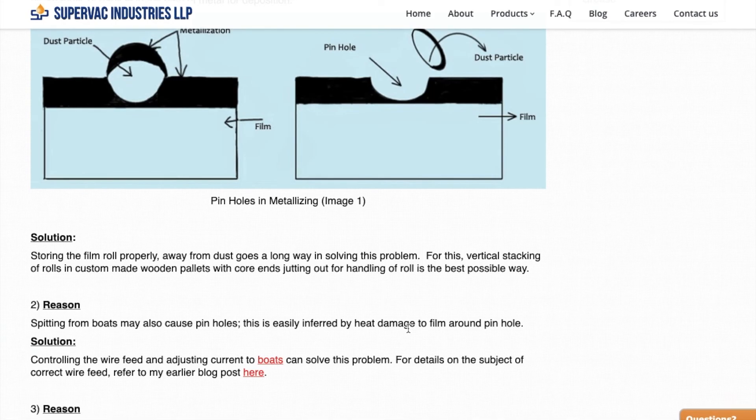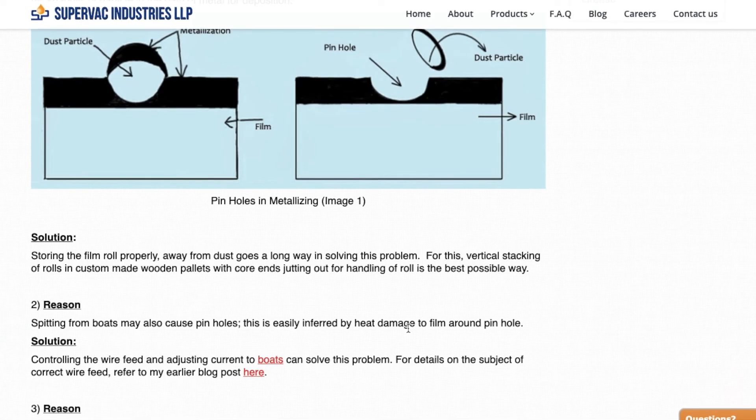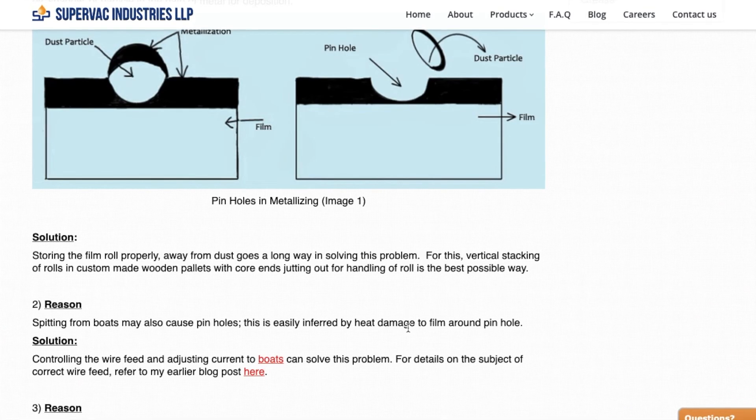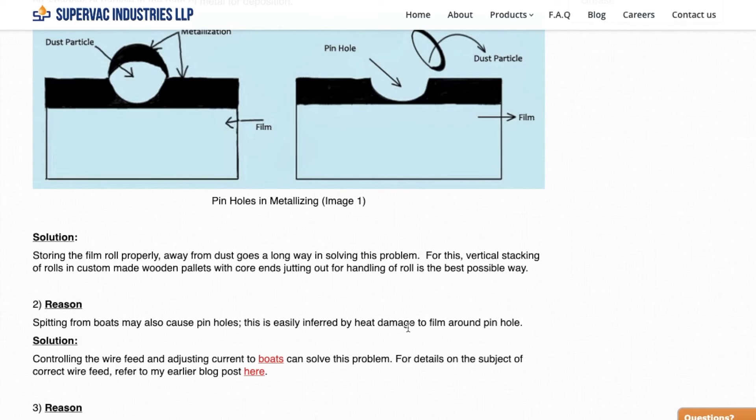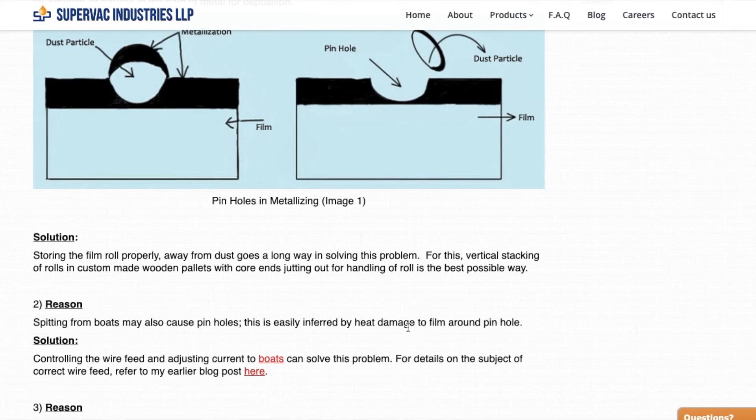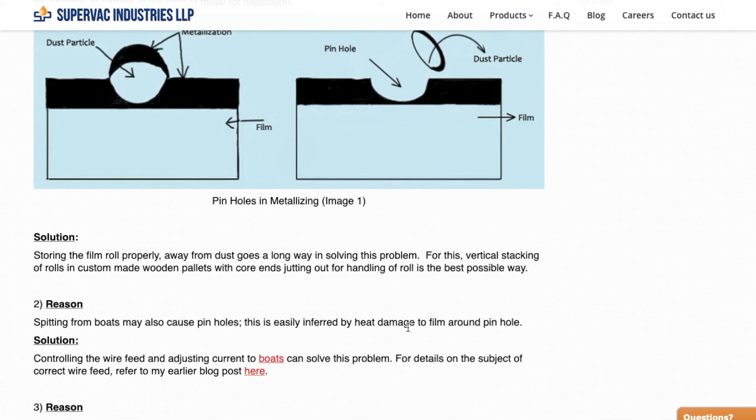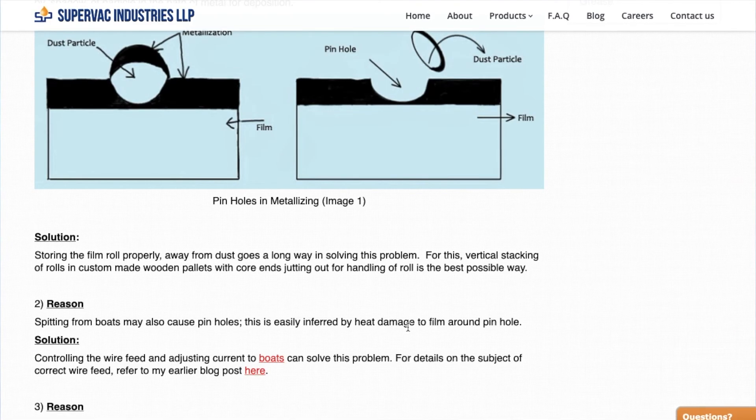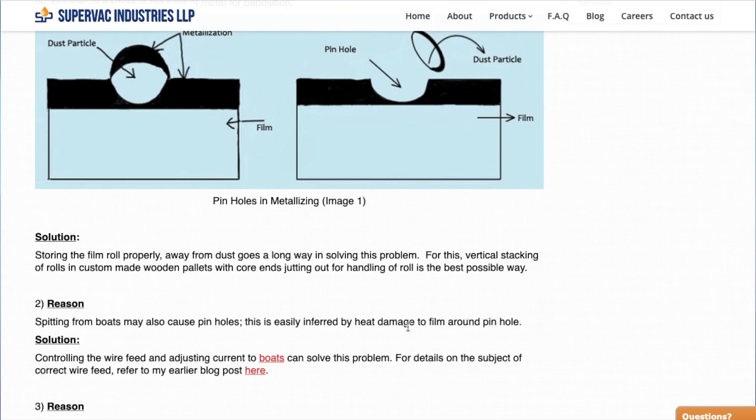Second reason for pinholes is spitting by the evaporation boards. So how to first identify? This identification is once again very simple. If you look at area around the pinhole, there will be heat damage. This gives away that it has been caused by the spitting of the evaporation boards.